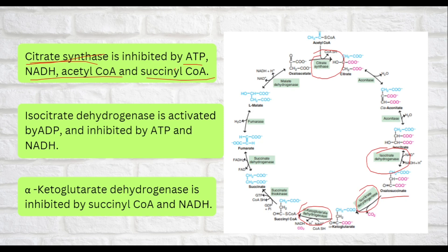How does ATP inhibit citrate synthase? The final aim of the citric acid cycle is ATP production. If sufficient ATP is already present, ATP inhibits citrate synthase, slowing down the cycle to avoid energy waste.